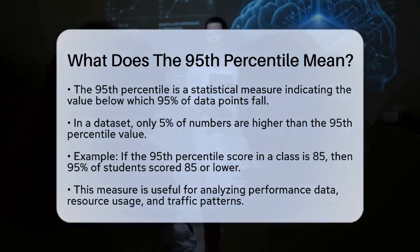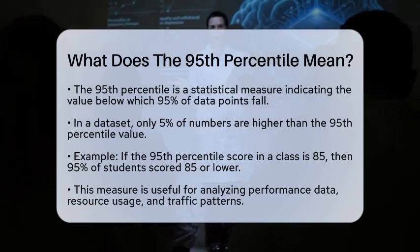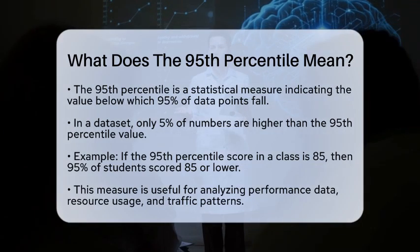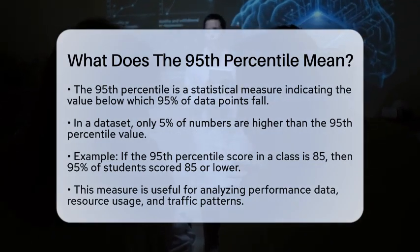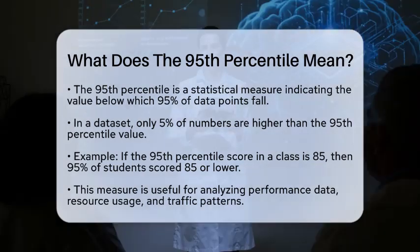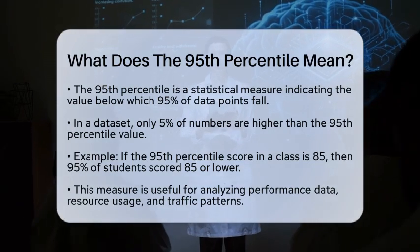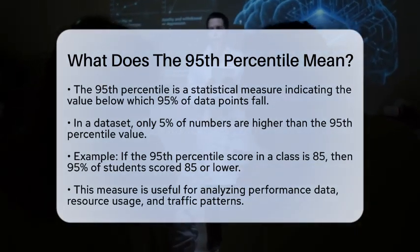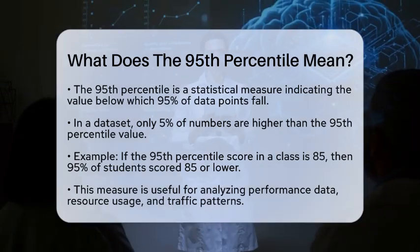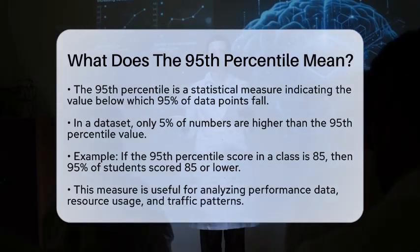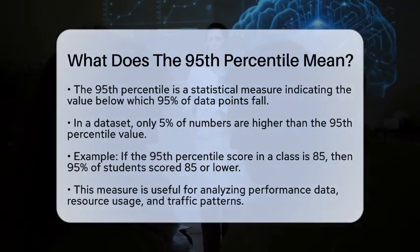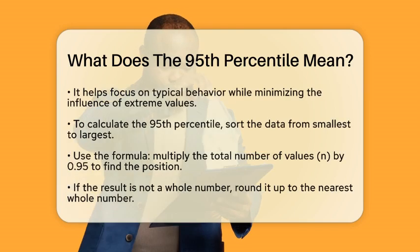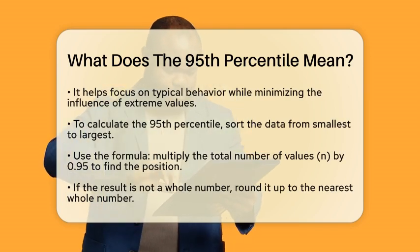This means that if you have a collection of numbers, the 95th percentile is the point where only 5 percent of the numbers are higher. To understand this better, imagine you have a list of test scores from a class. If the 95th percentile score is 85, that means 95 percent of the students scored 85 or lower, and only 5 percent scored higher. This is particularly useful when looking at performance data, resource usage, or traffic patterns, as it helps focus on typical behavior while reducing the impact of extreme values.